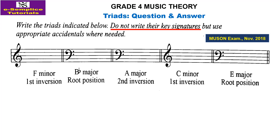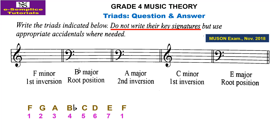This question is from Muzan exam November 2018. It says: write the triads indicated below. Do not write their key signatures, but use appropriate accidentals where needed. The first one is F minor, first inversion. The notes in F minor have key signature accidentals which are B flat, E flat, A flat, and D flat. To be proficient in writing triads, you need excellent knowledge of key signatures.